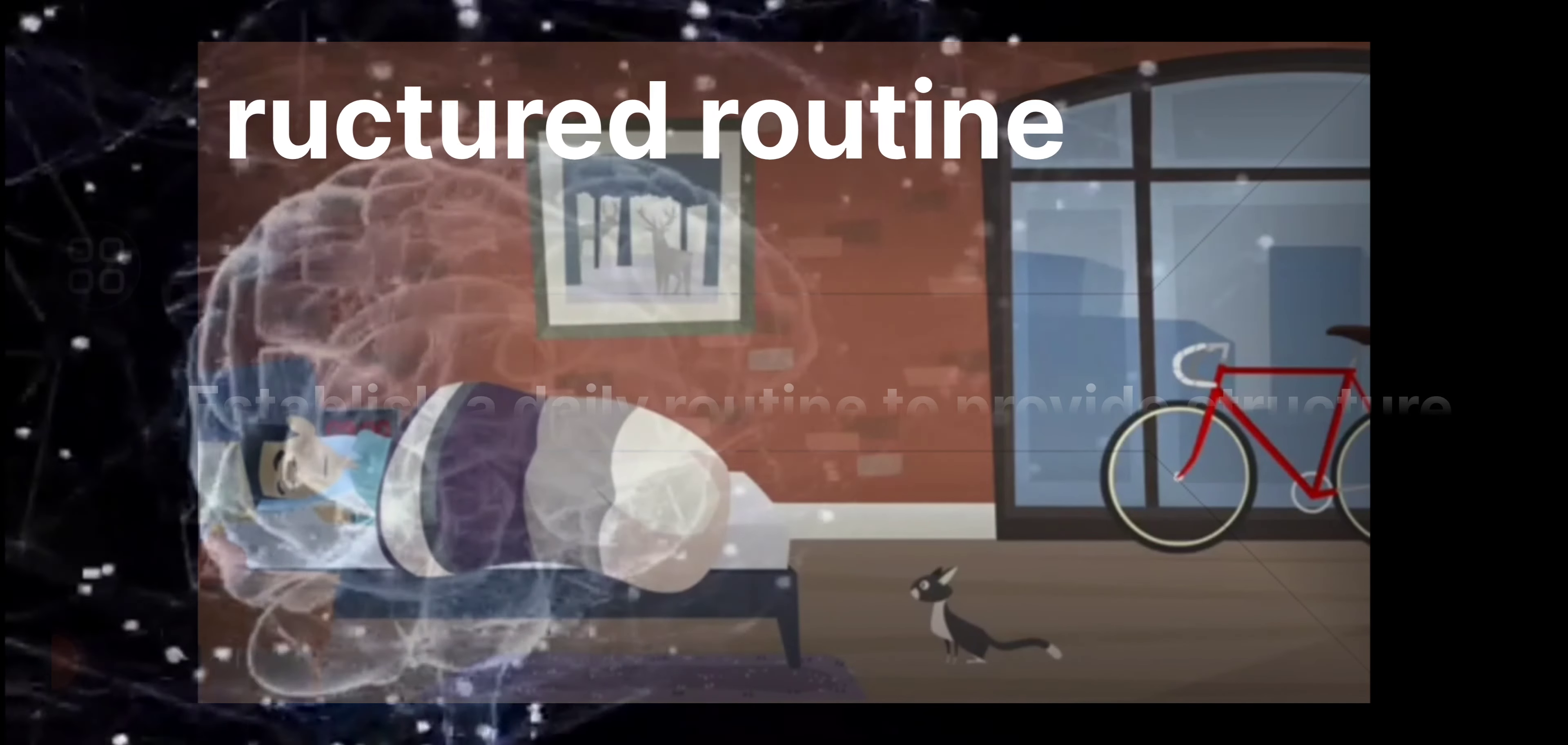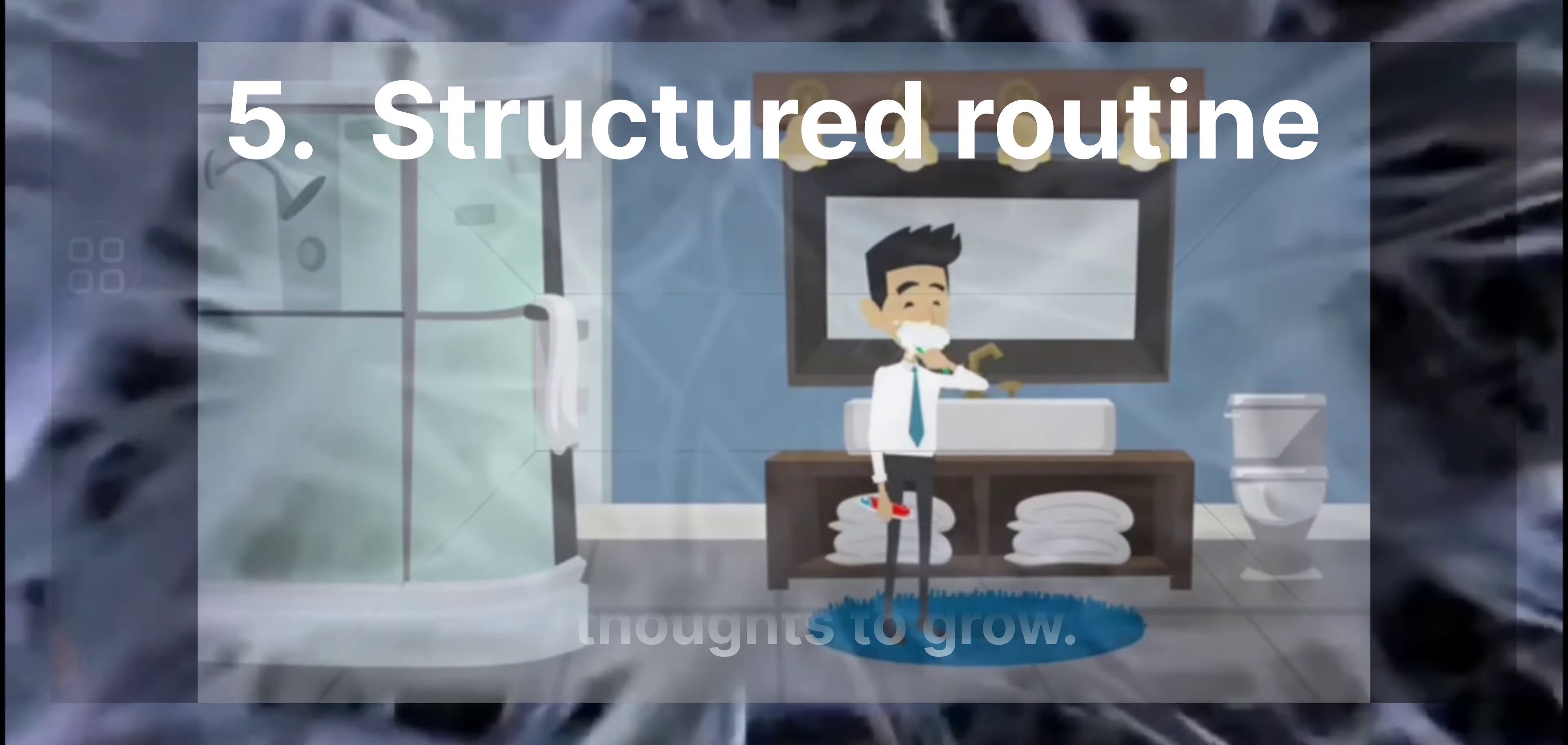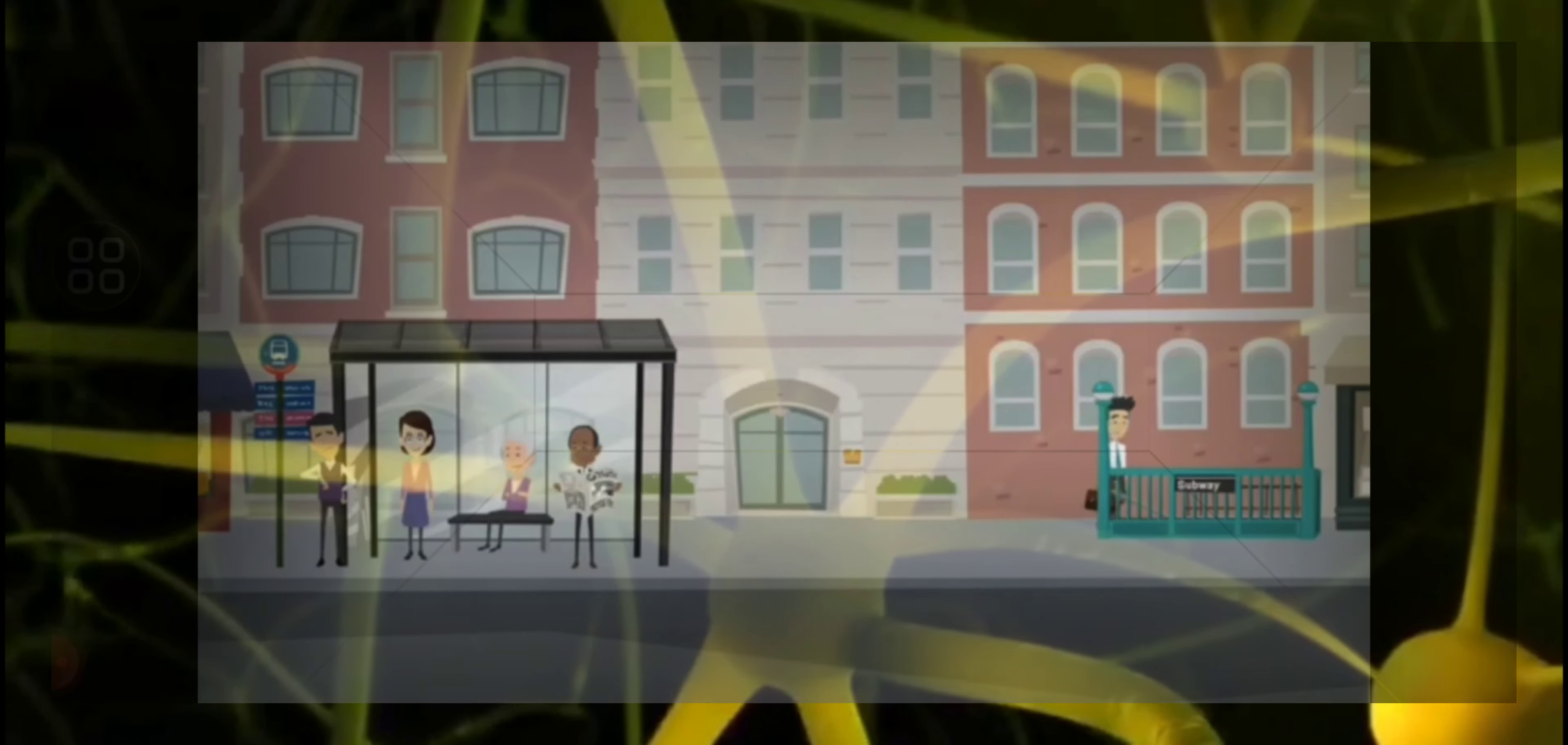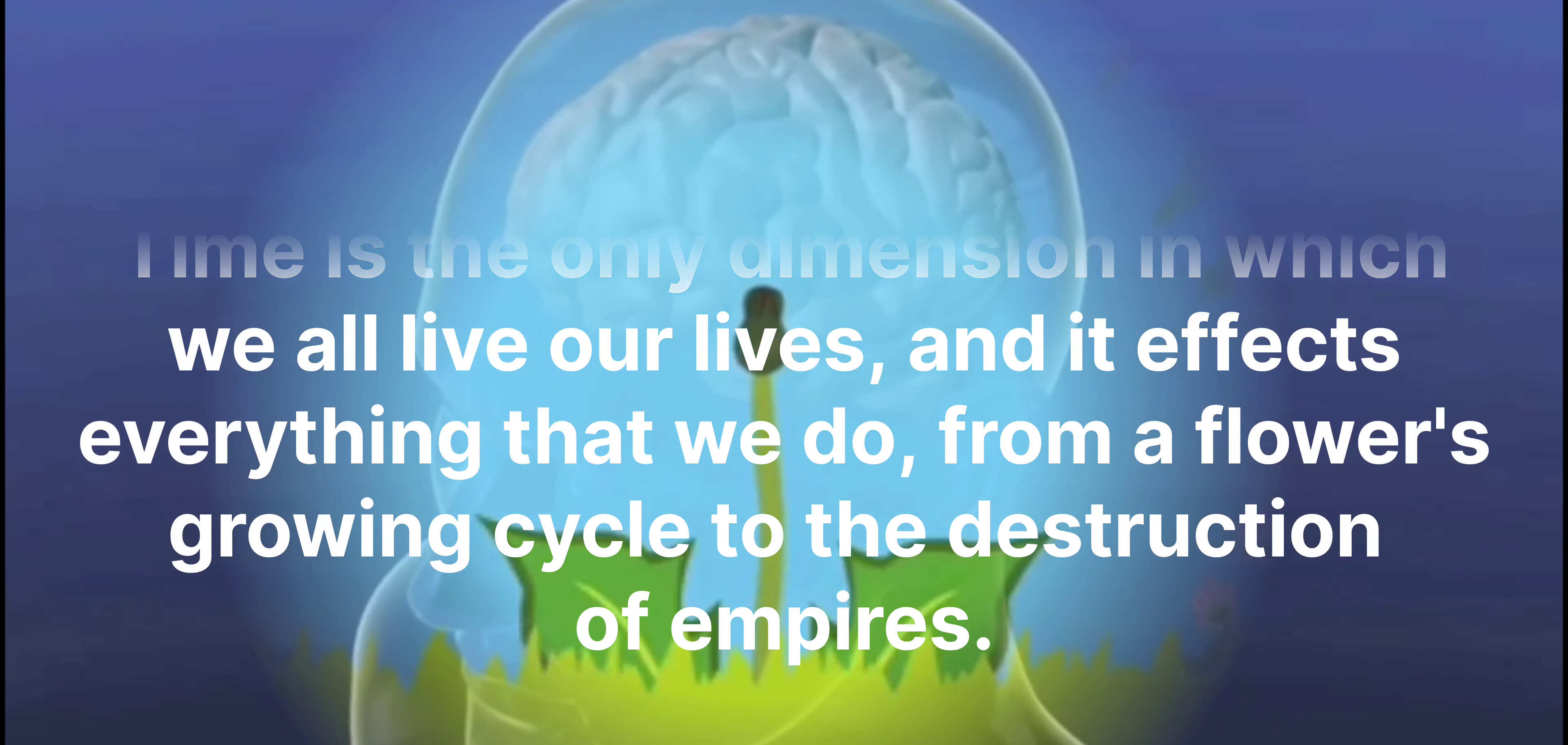Fifth Strategy: Structured Routine. Establish a daily routine to provide structure and predictability. It helps to occupy the mind, reducing the space for negative thoughts to grow. Time is the most valuable thing in life. It has no beginning or end. It can neither be created or destroyed. Time is the only dimension in which we all live our lives and it affects everything that we do from a flower's growing cycle to the destruction of empires.